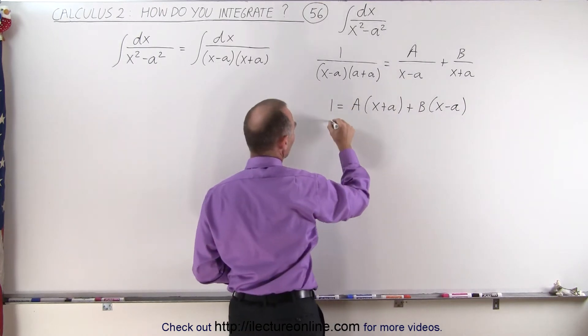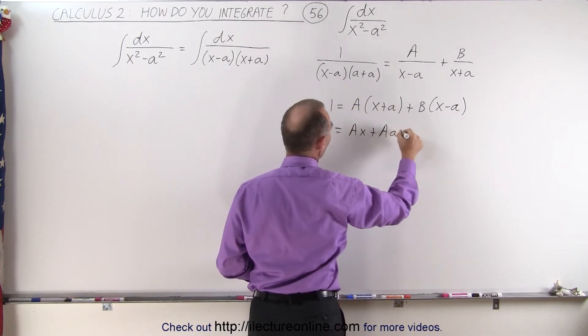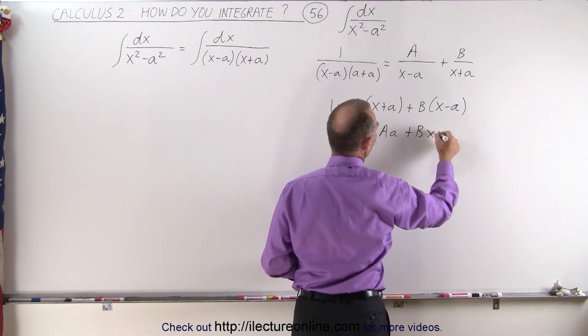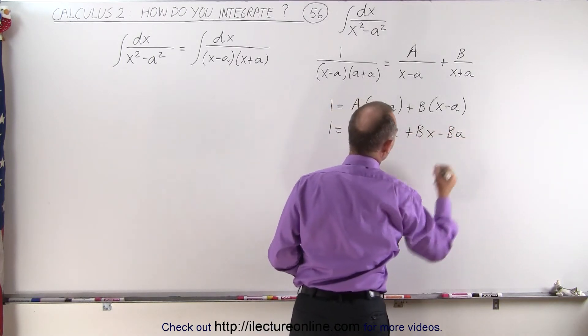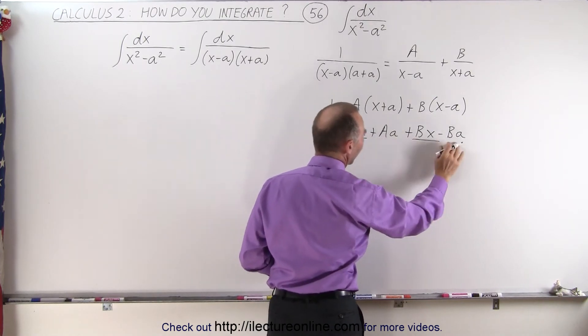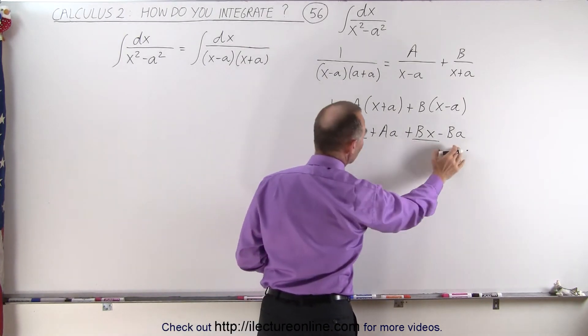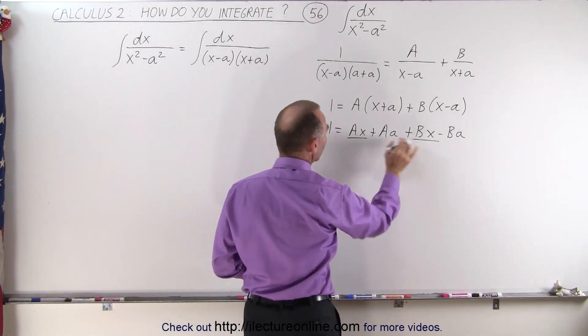Multiplying this through, we get 1 is equal to Ax plus Aa plus Bx minus Ba. And realizing here we have two terms that have an x in them and two terms that don't, that are just constants. So we're going to set 1 equal to the two constants and 0 equal to the two terms with an x.